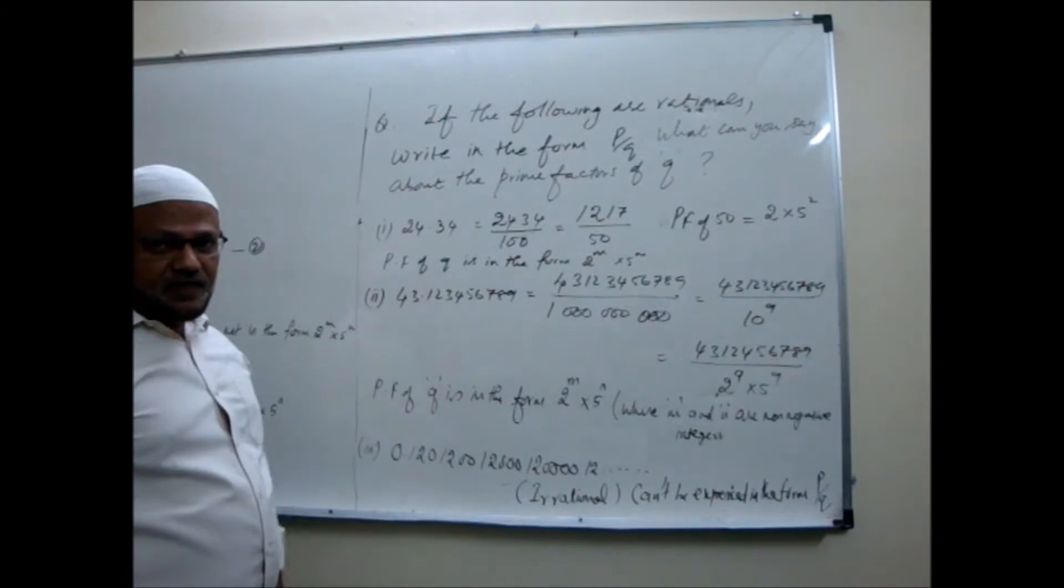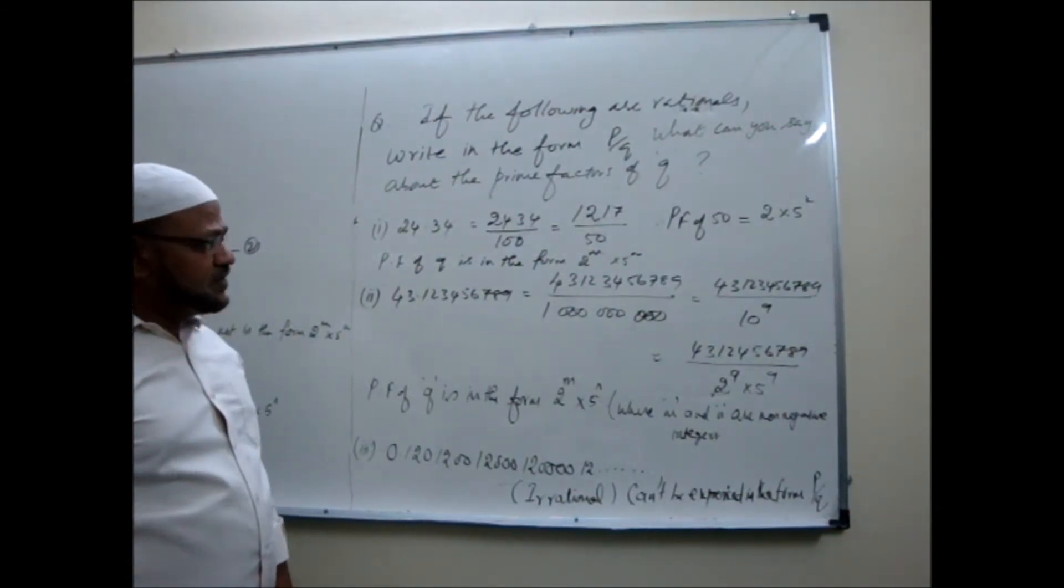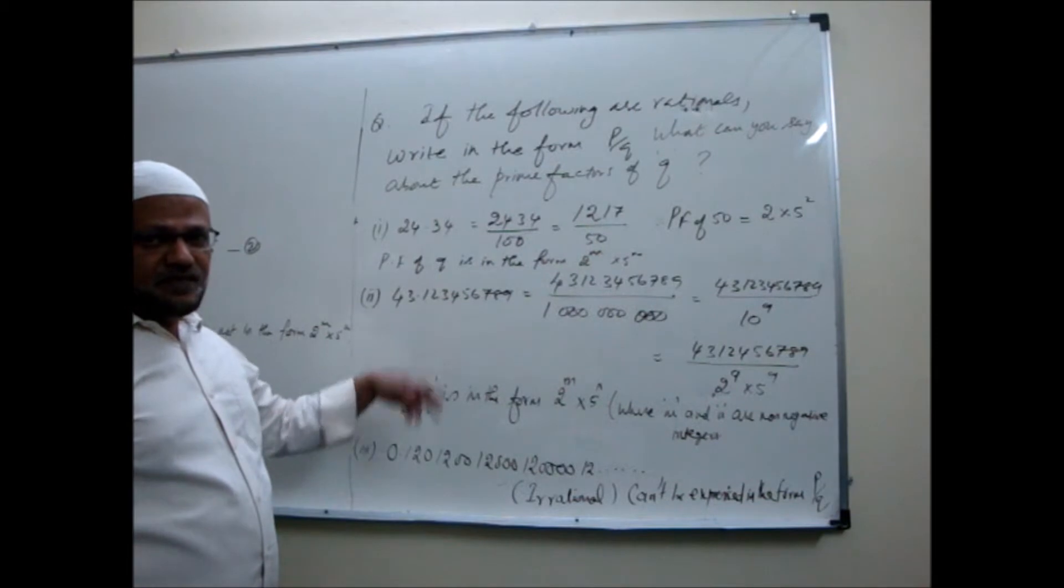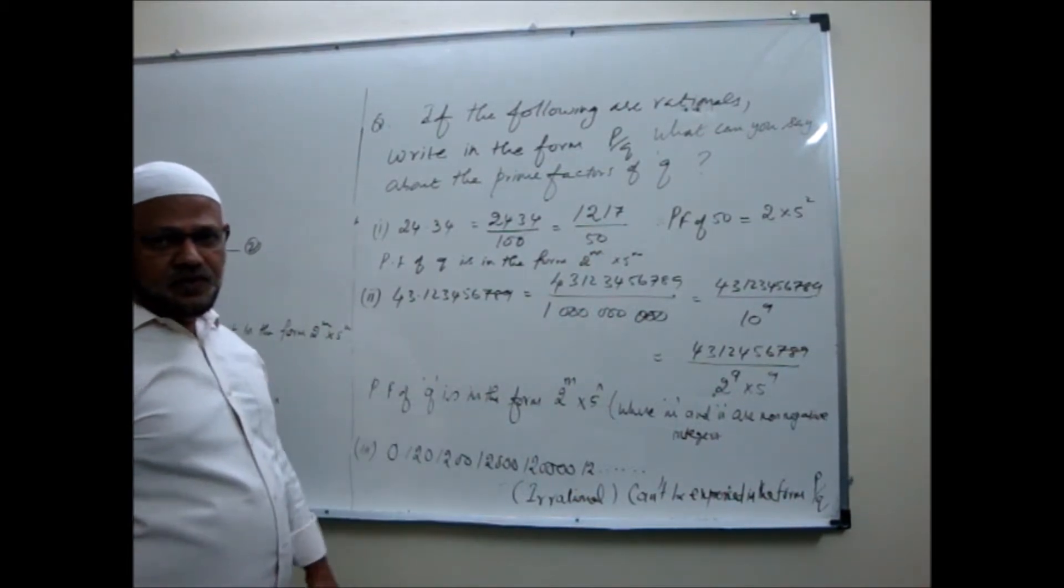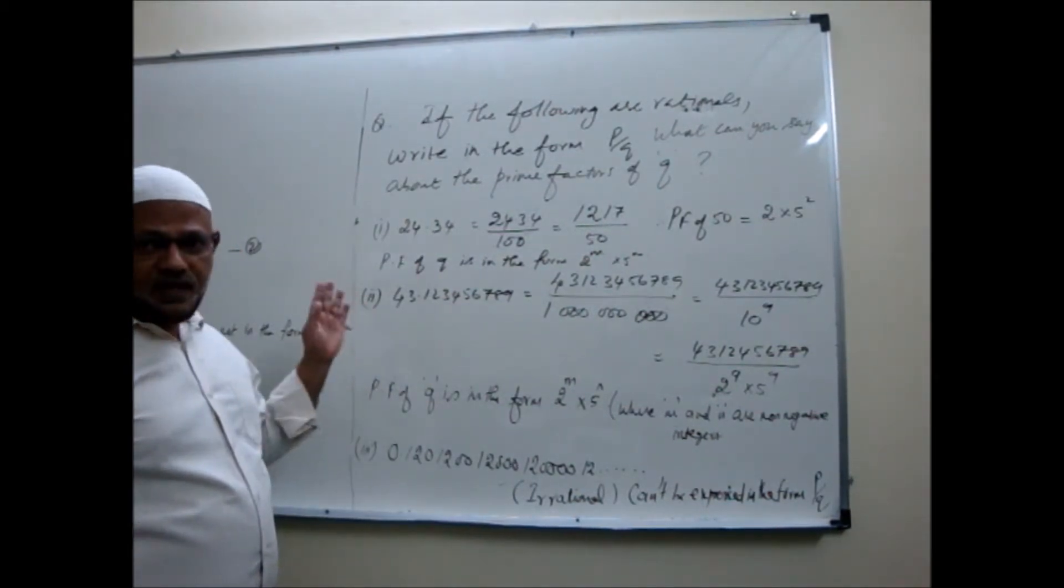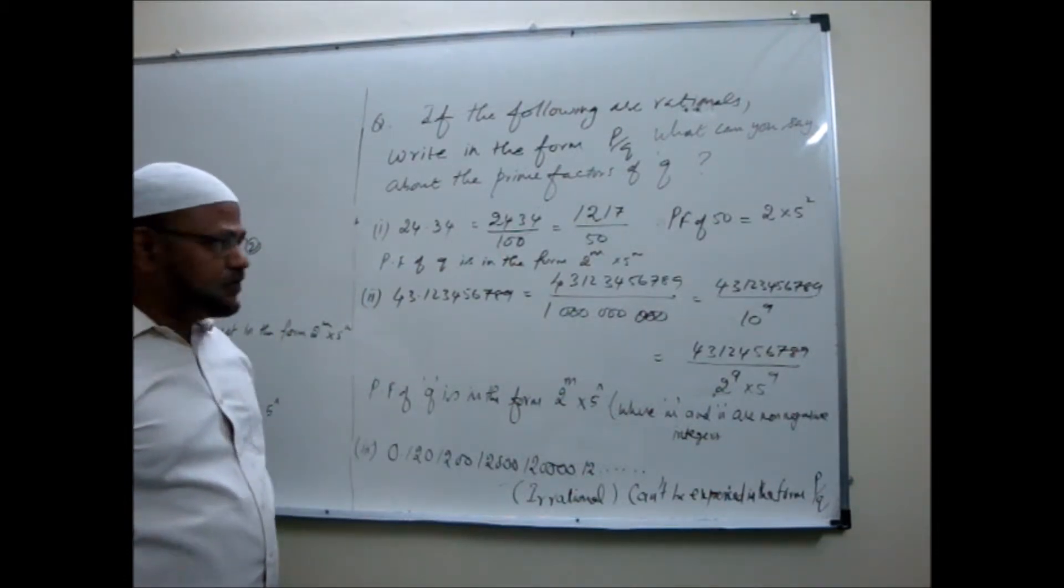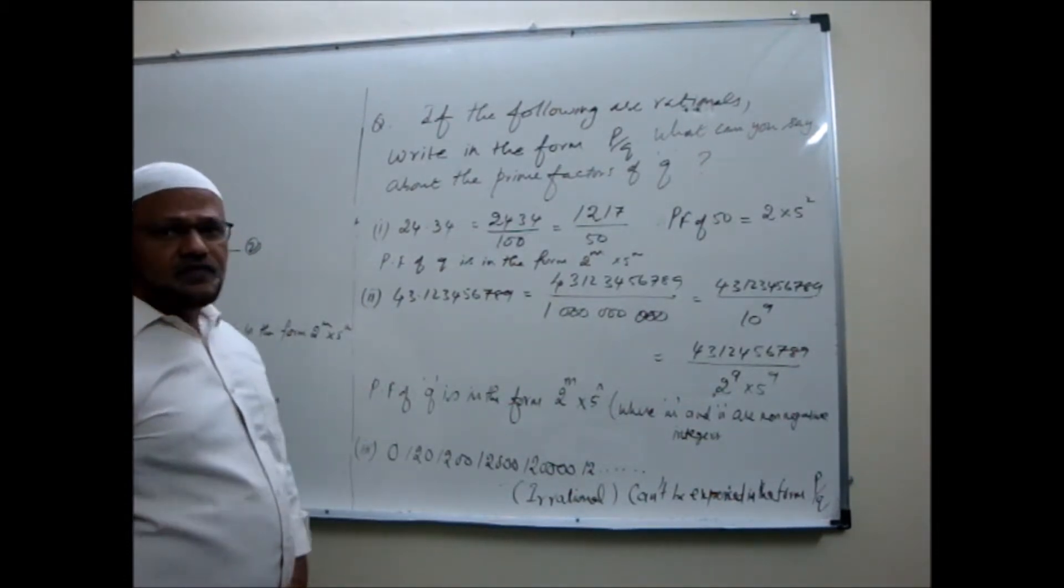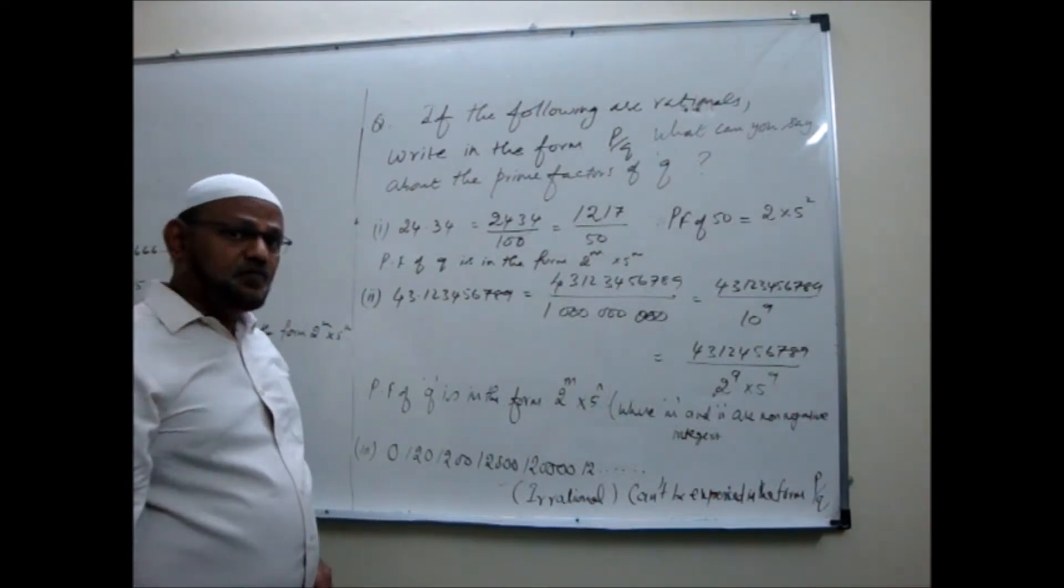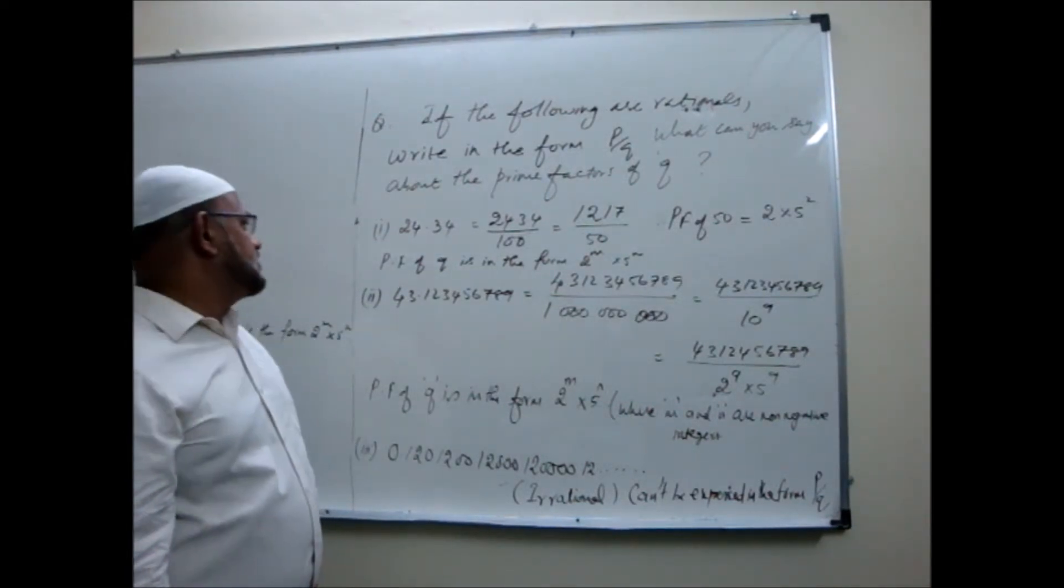If they are giving you some decimals, it may be terminating or recurring type. You have to write it back into fractional form, rational form, P by Q form. This we have already learned in class 9. You might be remembering it. Same thing, one or two examples we discuss as it is in the book.